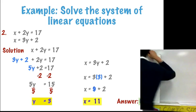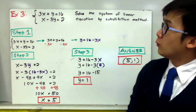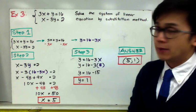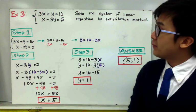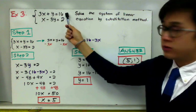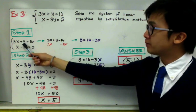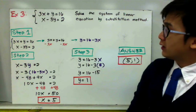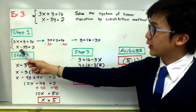For our third example, no linear equation in the system has a variable by itself, which is different from examples 1 and 2. The first step is to decide which linear equation to manipulate. I chose line 1 so that I could isolate y by subtracting 3x from both sides, giving me y is equal to 16 minus 3x. Now the system looks like the first two examples — one equation with a variable equal to an expression, and one in general form.